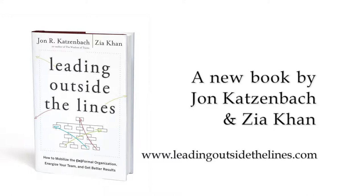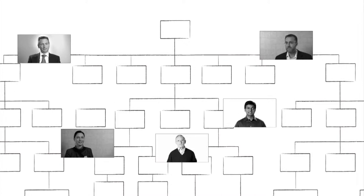Formal organization is something we're all familiar with. It's strategy, a structure, processes, metrics. It aligns the behaviors in an organization.